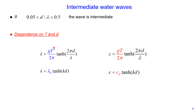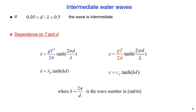I show the full equations for wavelength and wave speed. In front of the hyperbolic tangent — shown in blue for wavelength and in red for wave speed — are the deep water equations. Therefore, the full equation for intermediate water waves is: wavelength equals the deep water wavelength multiplied by the hyperbolic tangent of wave number times water depth. Similarly, wave speed for intermediate water equals the deep water wave speed multiplied by the hyperbolic tangent of wave number times water depth, where wave number equals 2π divided by λ, with units of radians per meter.